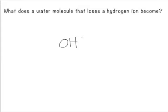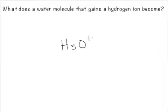Water molecules that lose hydrogen ions become hydroxide ions. Notice that it's just water that has lost an H+, really a proton. Water molecules that gain a hydrogen ion or a proton are essentially hydronium ions, H3O+.